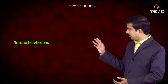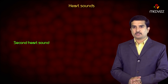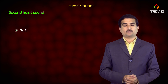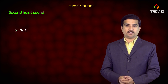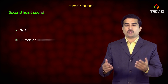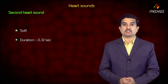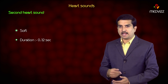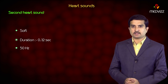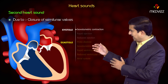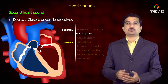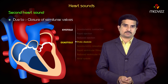Next is the second heart sound. The second heart sound is soft in nature when compared to the first heart sound, and the duration is 0.12 seconds. The intensity is 50 Hz and it is mainly because of the closure of semilunar valves.